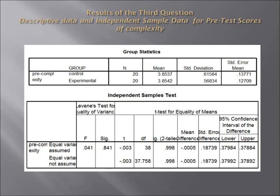Descriptive data and independent sample T-test for pre-test scores of complexity showed that the mean score of both the control group and the experimental group is 3.85, with P greater than 0.05, indicating no significant differences between the two groups in the pre-test.